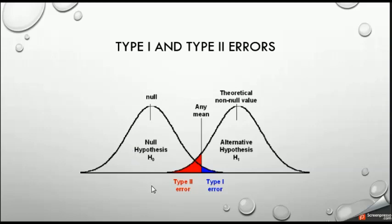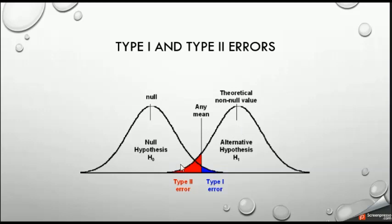Now suppose the null hypothesis is false and we have a different distribution — the mean value has changed to another value. Now we have the Type 2 error, which means failing to reject the null hypothesis when the null hypothesis is false. The null hypothesis being false means we have another distribution for the mean value. We will fail to reject the null hypothesis if we lie inside the acceptance region.